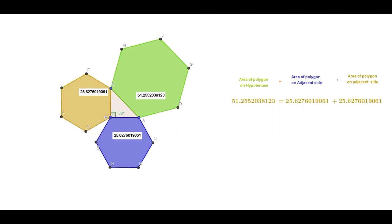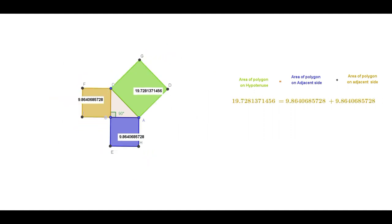In other words, we can say that in any right-angled triangle, the area of a regular polygon on the hypotenuse is equal to the sum of the areas of the same regular polygon on the other two sides. I am giving you one more thing to explore: check this by drawing a semicircle on the right triangle — that is, construct semicircles with the sides of the right triangle as the diameter. Do this activity, verify the Pythagoras theorem, and write your inference in the comment box, children.